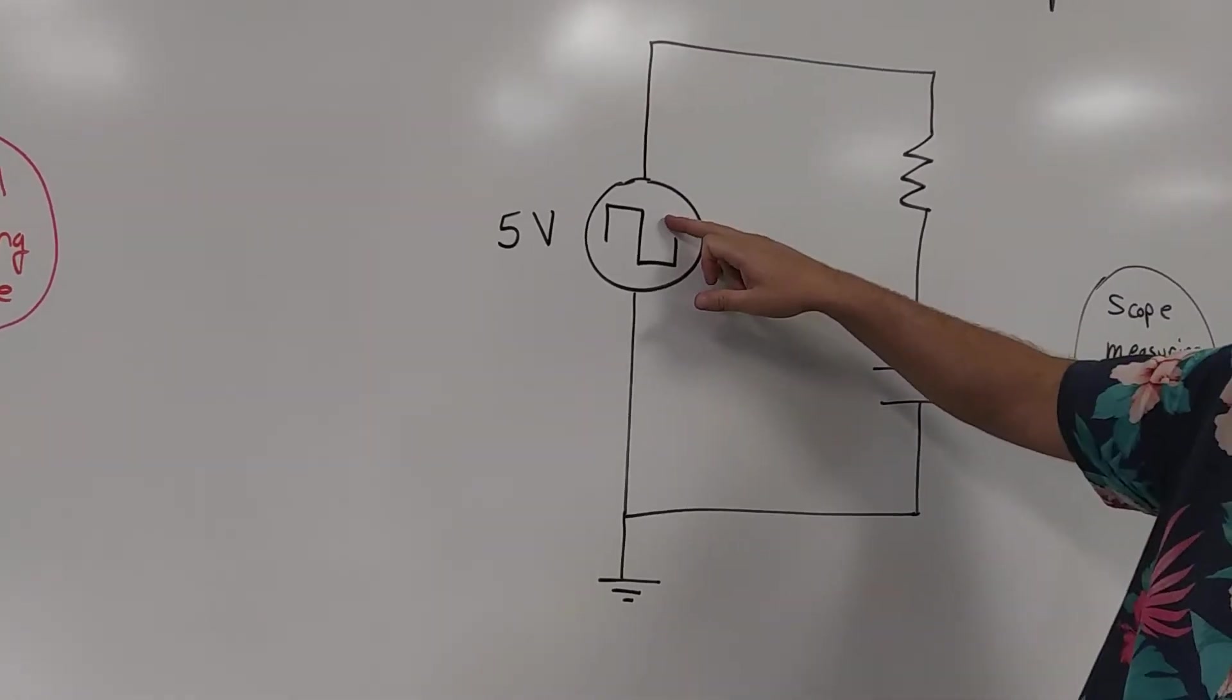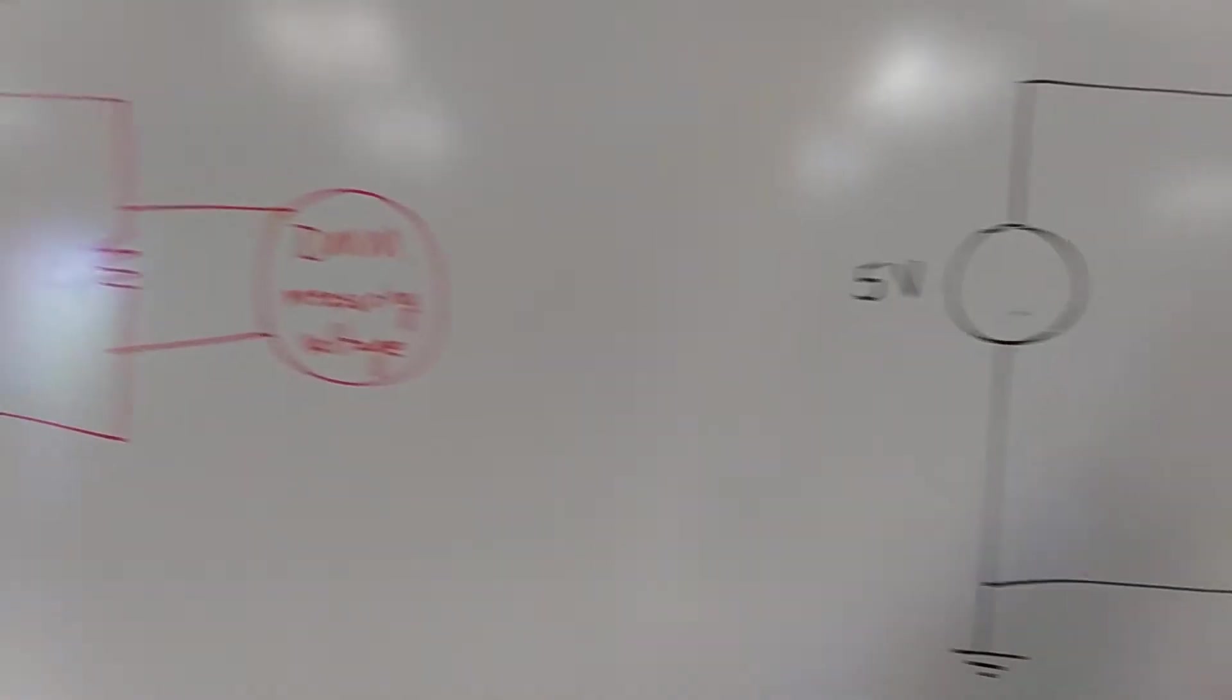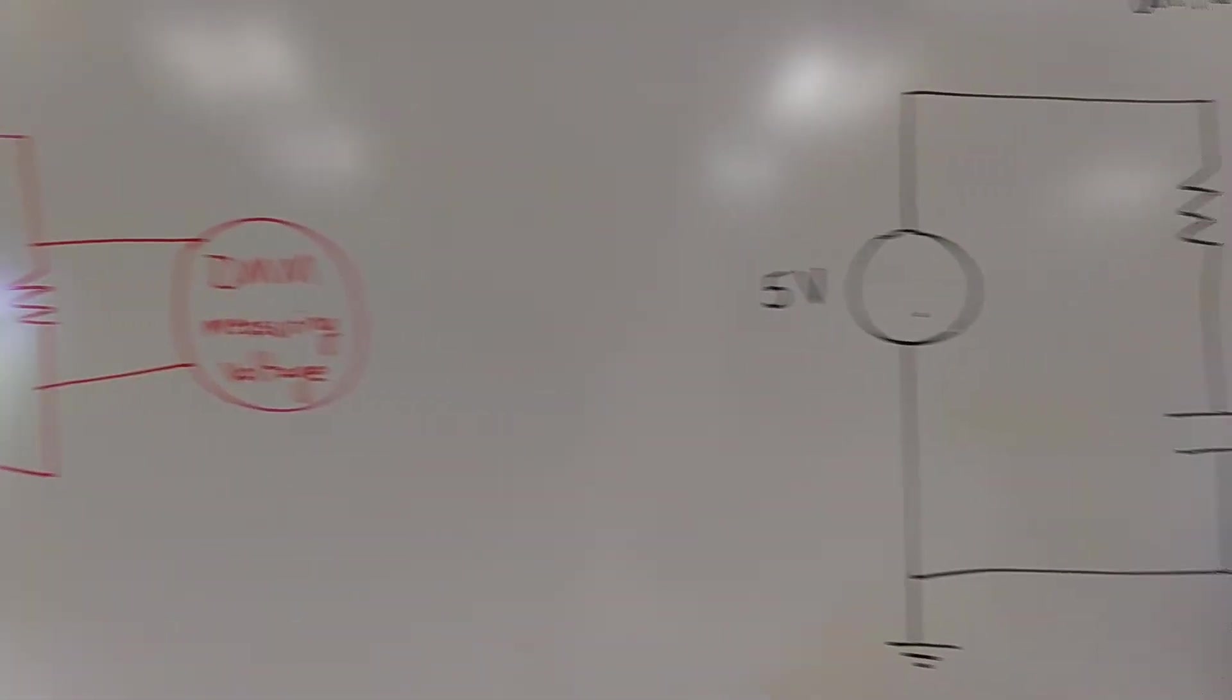When this is off, when it goes to zero, we see this loop and that loop look exactly the same. I do want to point out one difference.